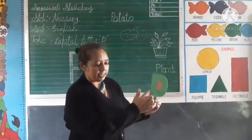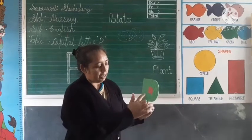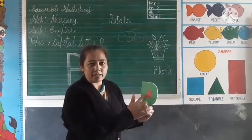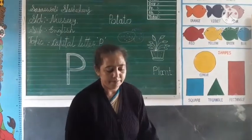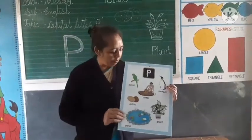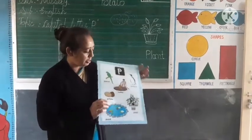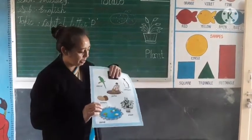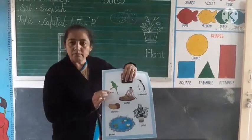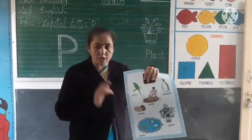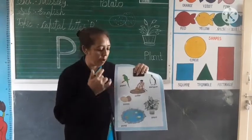Which letter? Capital letter P. All of you look here. This is a child writing letter P. Capital letter P. P for plant. I show on pictures — all of you look properly.